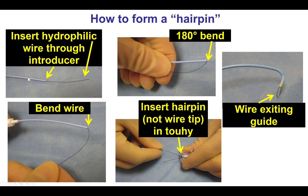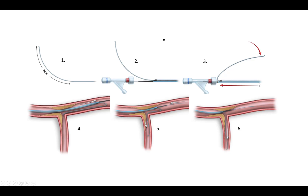Here is how this is done: the wire is bent at 180 degrees and advanced with the knuckled part in front, and this is how the wire looks when exiting the guide catheter straight into the coronary artery. Another way to do this is using a dual-lumen microcatheter: the wire is advanced through the over-the-wire lumen, the catheter is advanced all the way to the lesion, and then by withdrawing the dual-lumen microcatheter, the wire enters the side branch.